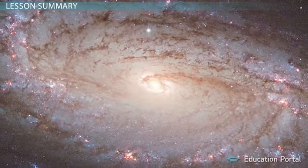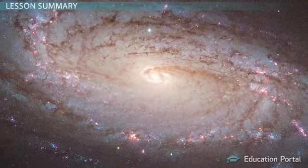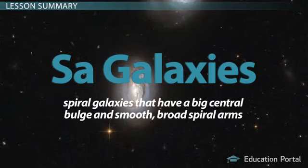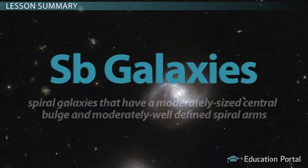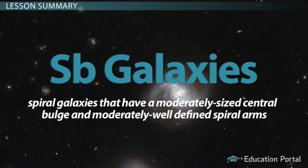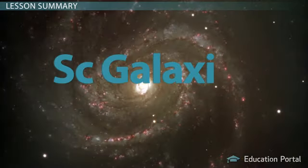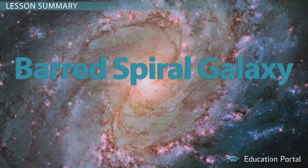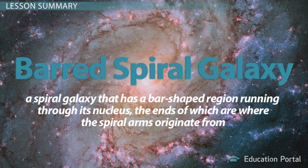In this lesson we went over several different types of galaxies. Spiral type A galaxies have a big central bulge and smooth, broad spiral arms. Spiral type B galaxies have a moderately sized central bulge and moderately well-defined spiral arms. Spiral type C galaxies have a very small central bulge as well as narrow and well-defined spiral arms. Barred spiral galaxies have a bar-shaped region running through the nucleus, with spiral arms originating from the ends of the bar.